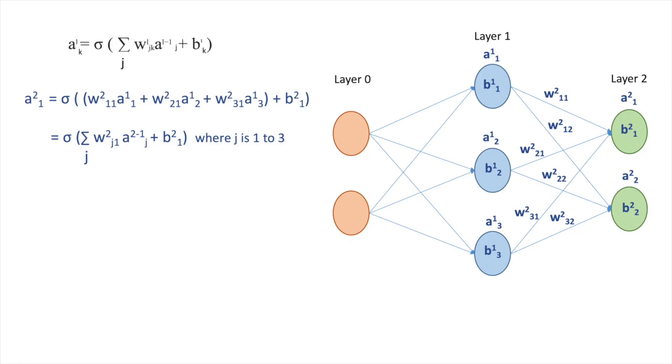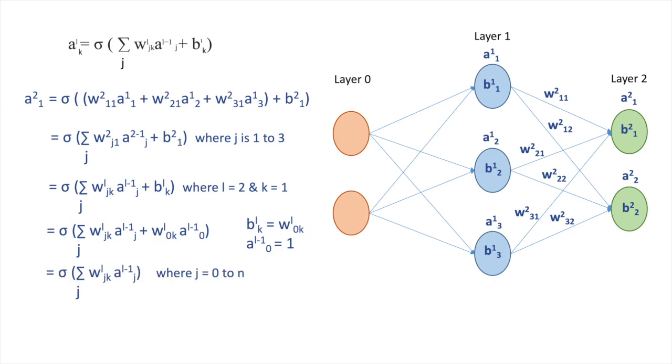Now if we replace 2 and 1 by l and k then we will get the equation. Now to simplify the formula, let's write b_k^l as w_0k^l and a_0^(l-1) equals 1. Then we can rewrite the function as w_jk^l times a_j^(l-1) plus w_0k^l times a_0^(l-1). And this can be written as w_jk^l times a_j^(l-1) where j equals 0 to n instead of 1 to n. So now our equation looks clean and compact. Here we have to do all the calculations only against weight matrix.